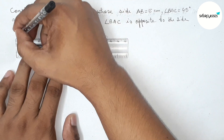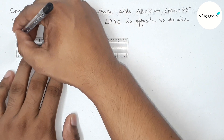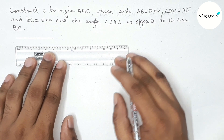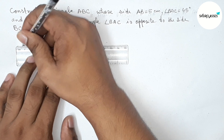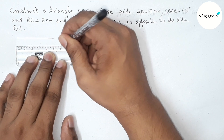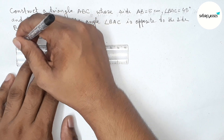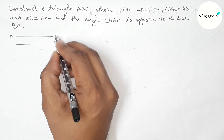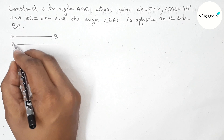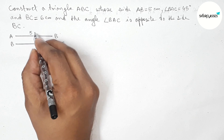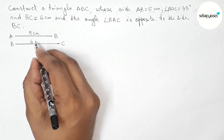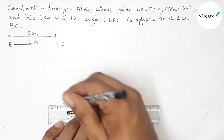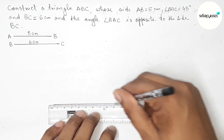First of all, let us draw the given two sides: 5 centimeter and 6 centimeter. This is a 5 centimeter line segment, and drawing another given line segment BC that is 6 centimeter. So here this is AB side of 5 centimeter and BC side of 6 centimeter.